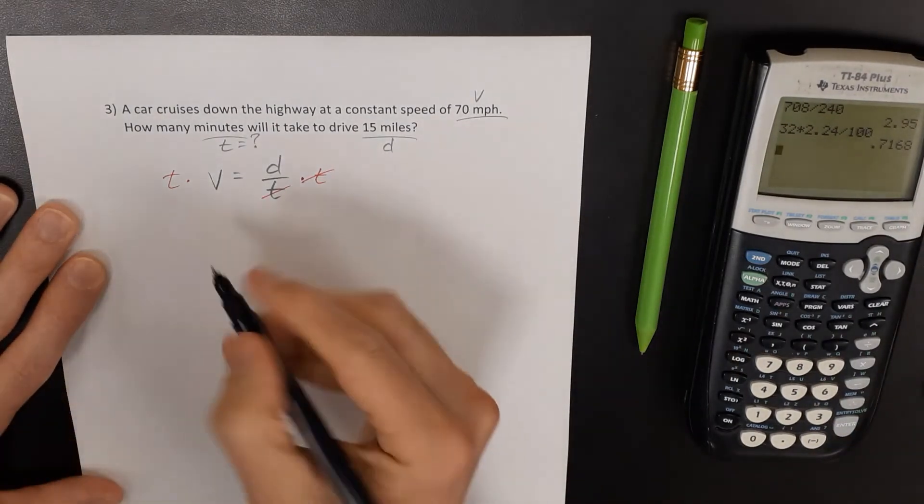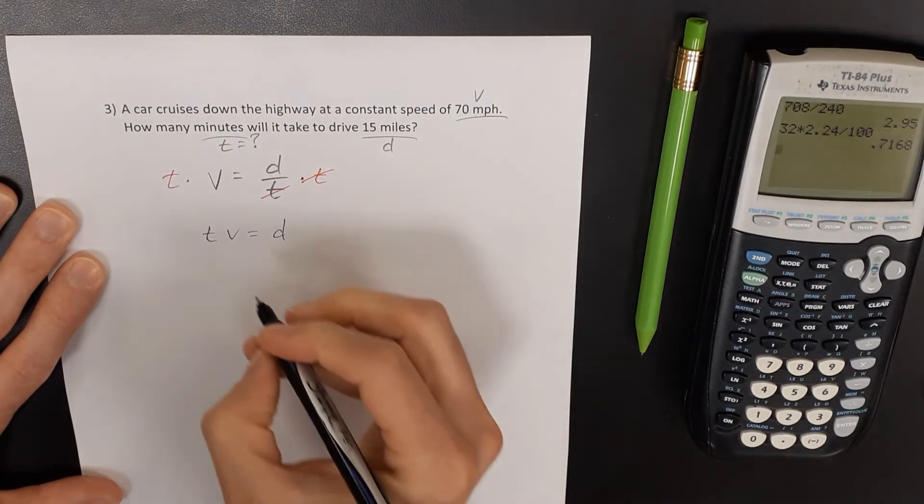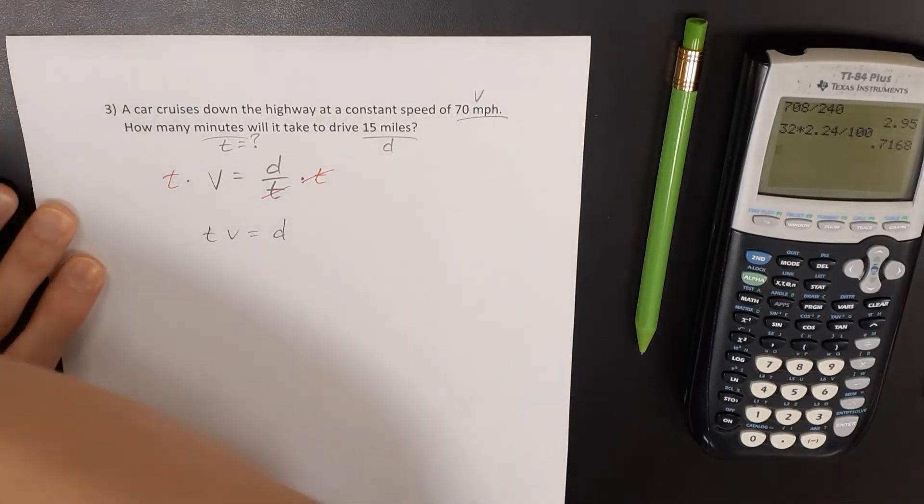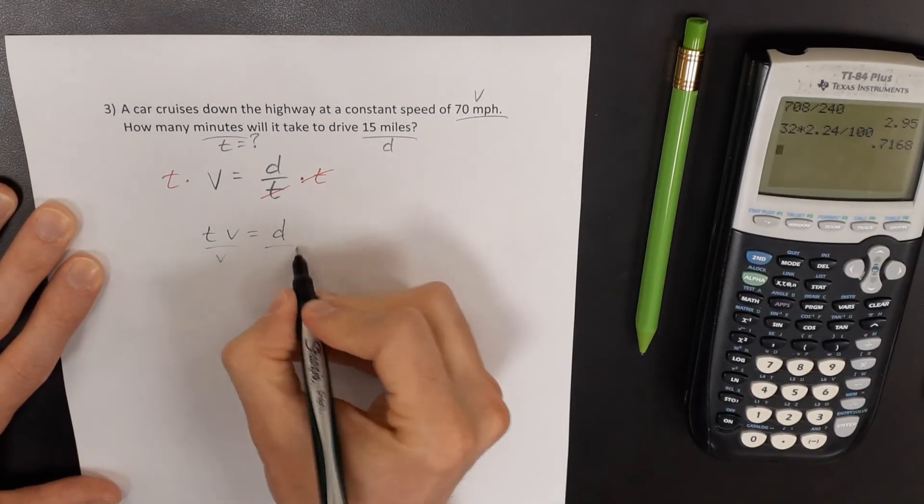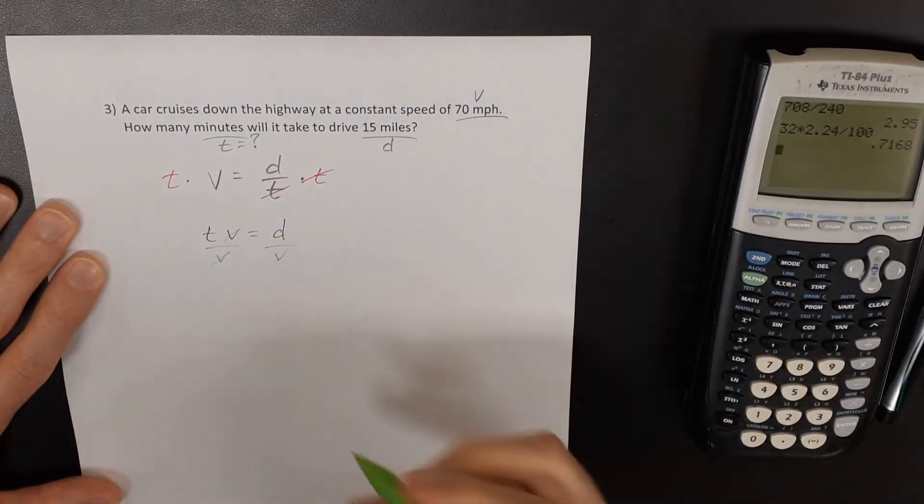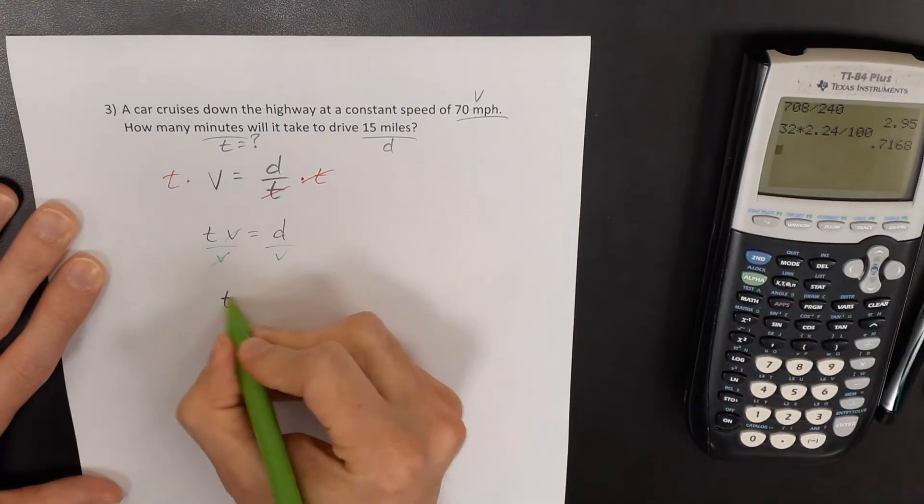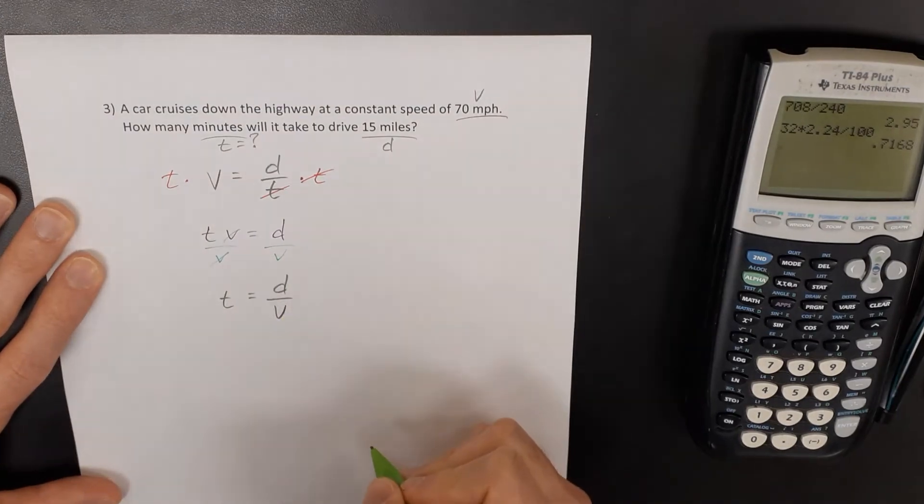And then now that I have TV equals D, I'm going to divide both sides of this equation by the velocity, so the velocity cancels out. And so what I have now is time is the distance divided by the speed.